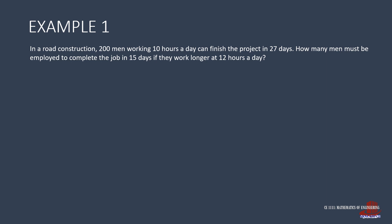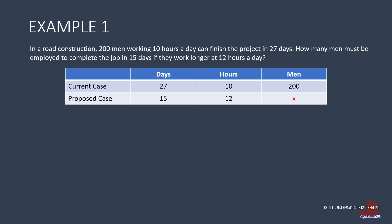There are three quantities in two different cases. The quantities are the days, the extent of hours, and the number of men. In the current case, 200 men work for 10 hours each day and finish a project in 27 days. The proposed case would require a certain number of men to work for 12 hours and they should finish a similar project in 15 days.